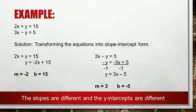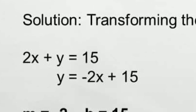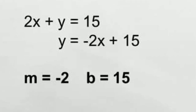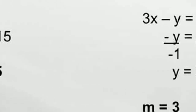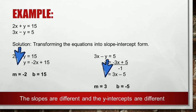Let us have this first example. We have 2x + y = 15 and 3x − y = 5. Let us transform the equations into slope-intercept form. For 2x + y = 15, we get y = −2x + 15, so our slope is −2 and our y-intercept is 15. For the second equation, 3x − y = 5, we get −y = −3x + 5, then dividing both sides by −1 gives y = 3x − 5. Our slope is 3 and our y-intercept is −5. As you can see, the slopes are different and the y-intercepts are different. Therefore, this is an independent system.